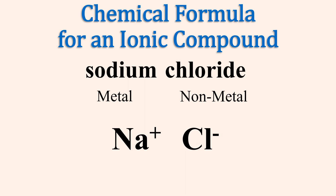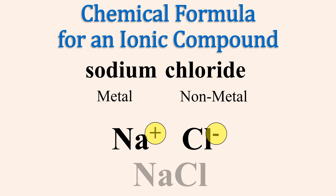The rule for chemical formulas involving ions is that their charges must balance. Here, one sodium ion's positive charge will balance one chloride ion's negative charge. Thus, the ratio is one to one.